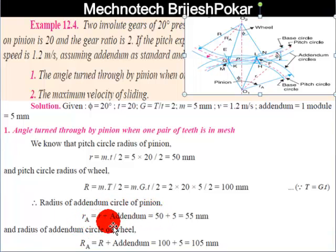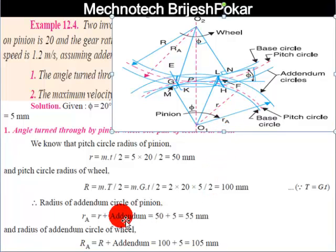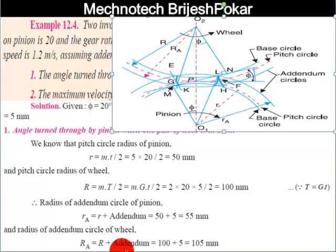The radius of the addendum circle of the pinion, R_a = r + addendum = 50 + 5 = 55 mm. The radius of the addendum circle of the wheel, capital R_A = R + addendum = 100 + 5 = 105 mm.